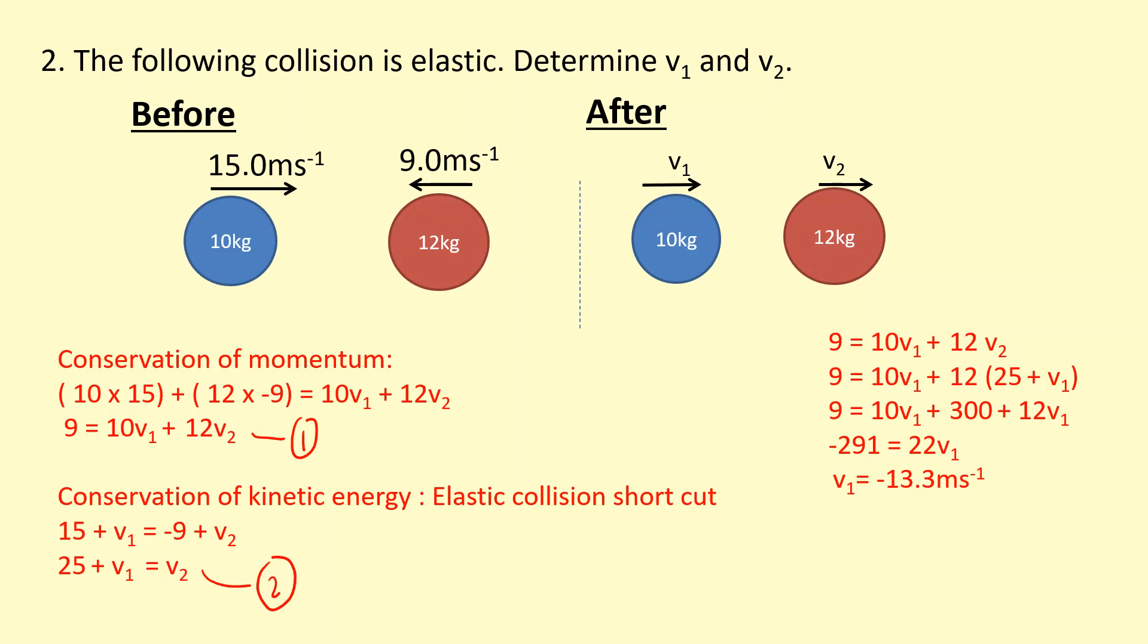v1 is equal to minus 13.3. So it's going towards the left at 13.3 meters per second. And if I put this v1 back into any of the equations, I'm going to put it back into equation two because that's easy. So I put that back in there, v1, I get v2 as 11.8, which is moving towards the right at 11.8 meters per second.